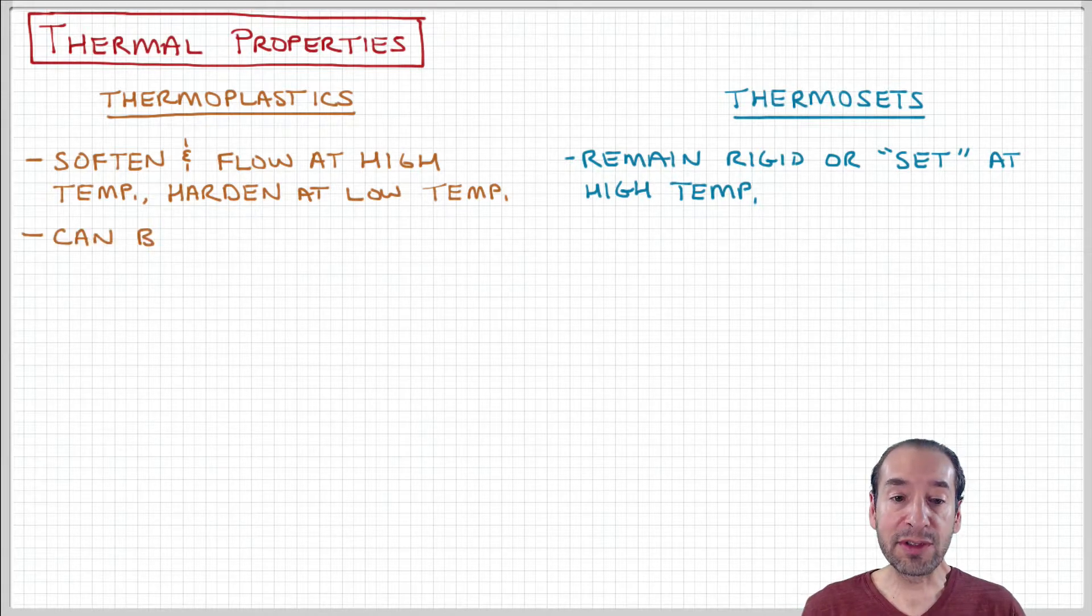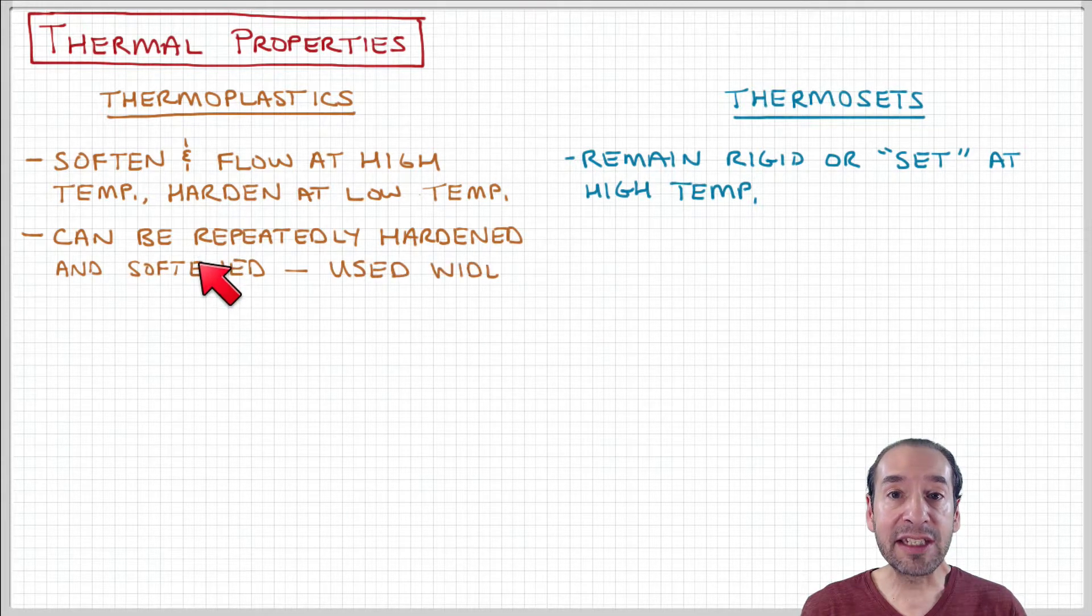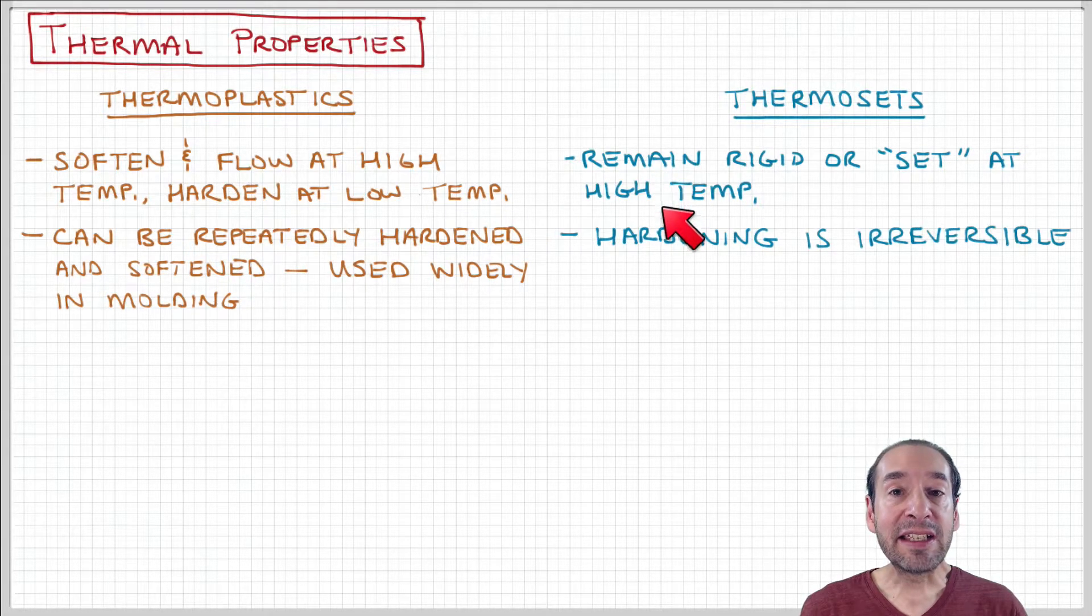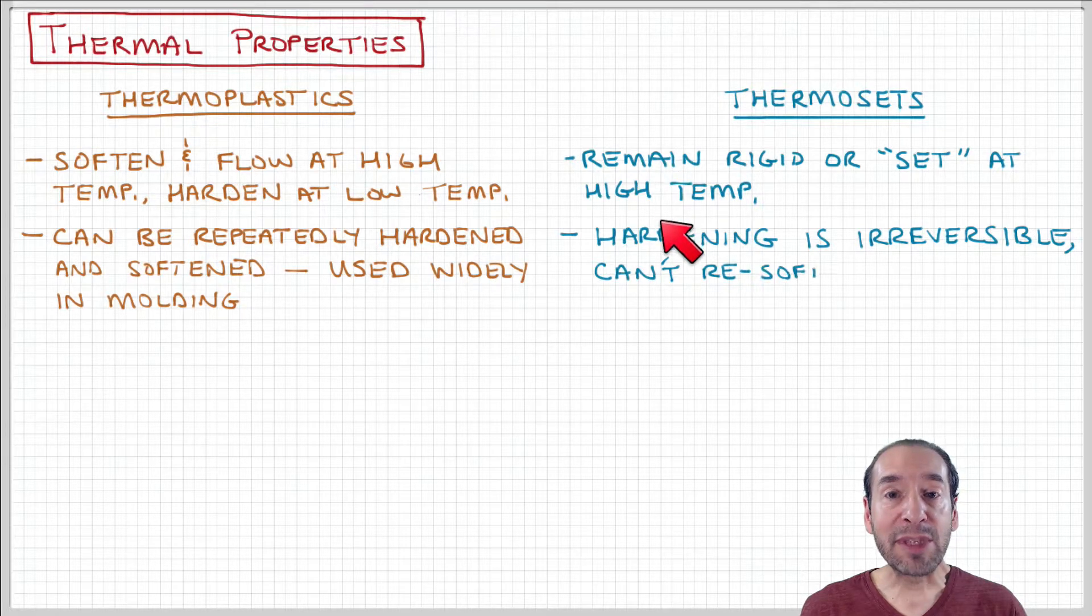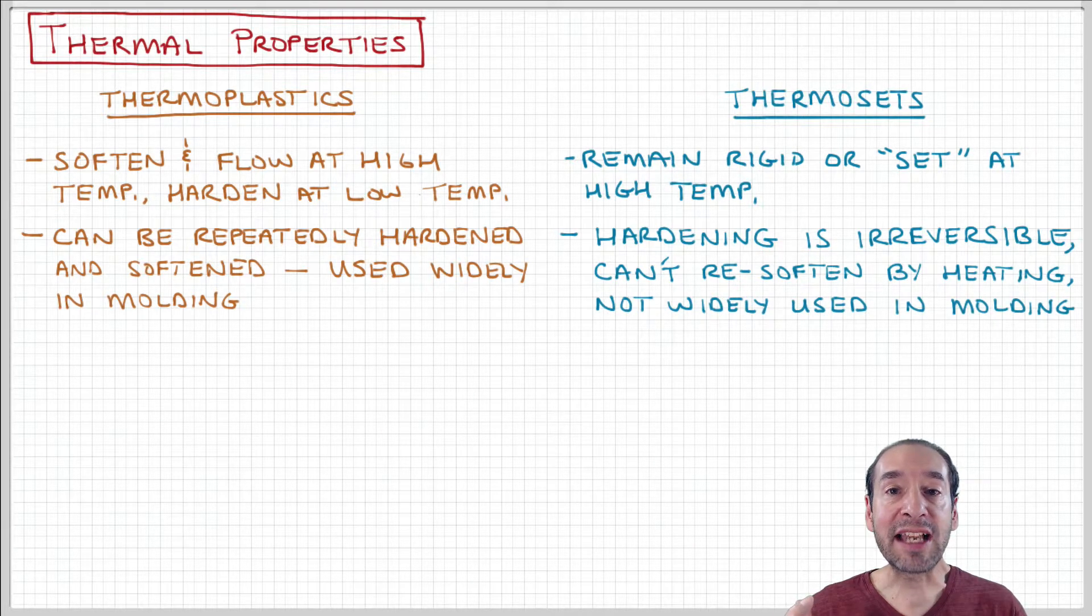So in other words you can reheat a thermoplastic to remelt it and then cool it down again and it will harden again, and you can do this procedure multiple times. A thermoset is not able to do that because once it becomes rigid or set at high temperatures it remains that way. So when you heat it up again it's going to stay set. It's not going to be able to be re-melted and re-hardened after the first cycle.